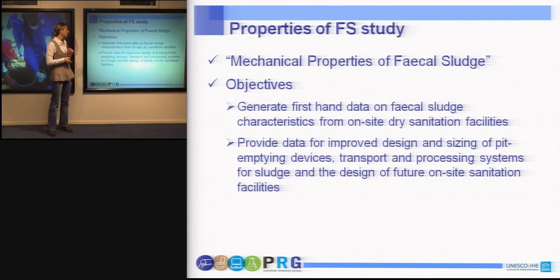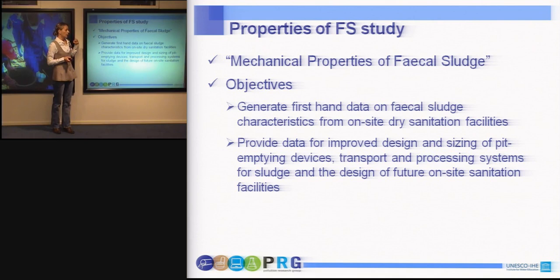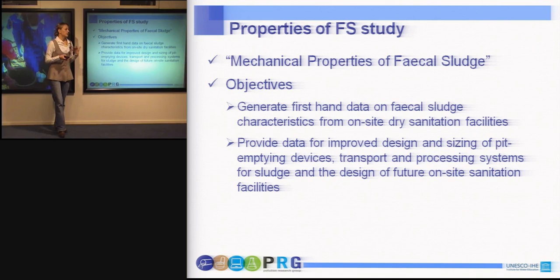I'm going to move on to a specific study I have been working on, called mechanical properties of fecal sludge. It incorporates quite a lot of properties of fecal sludge that have been studied and gives a good example of the importance of analysis and characterization of fecal sludge using quality standard operating procedures. The project is funded by the Bill and Melinda Gates Foundation and has already been completed. The main objectives were to generate first-hand data for fecal sludge characteristics from dry on-site sanitation facilities in Durban, South Africa, and to provide data for improved design and sizing of devices for transport and processing of sludge.